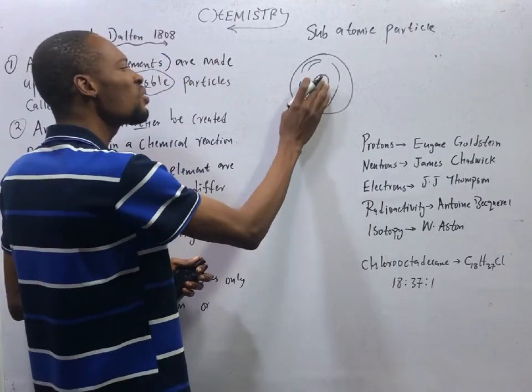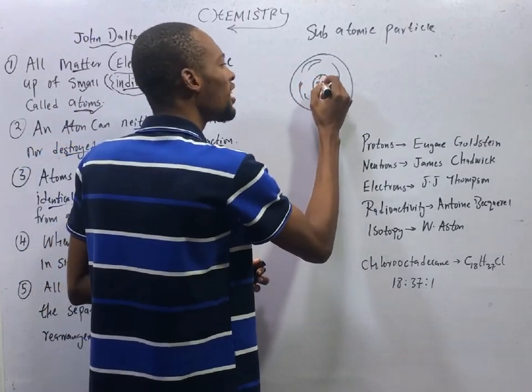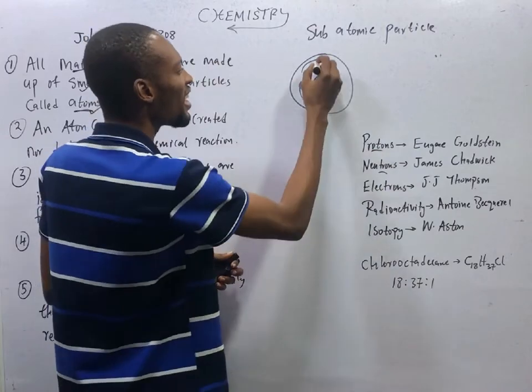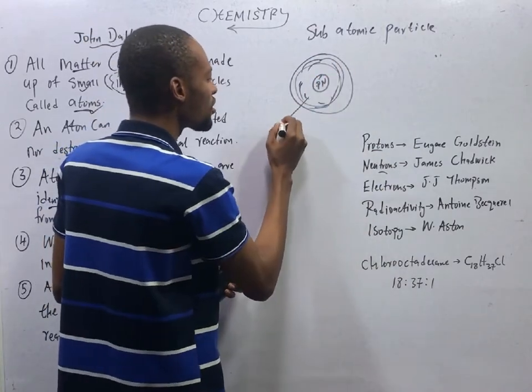In this nucleus, we have proton and neutron. Proton and neutron. Then around the nucleus, electrons, they revolve.